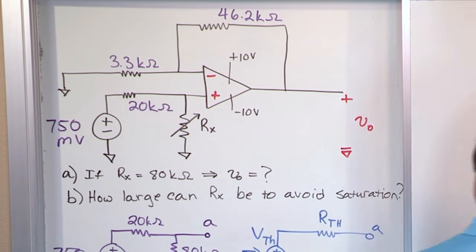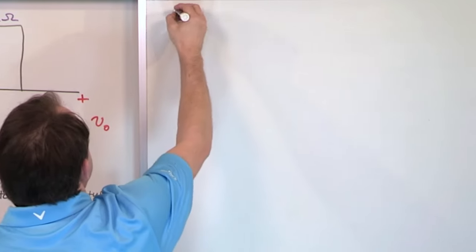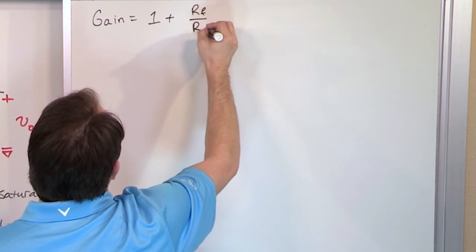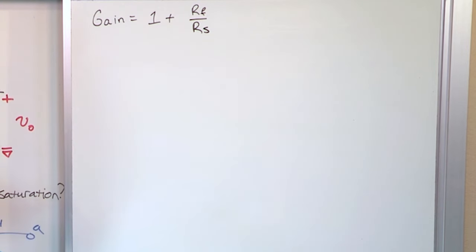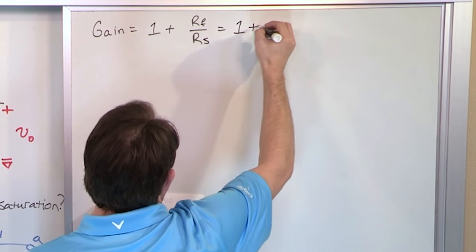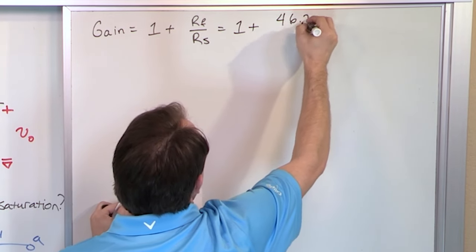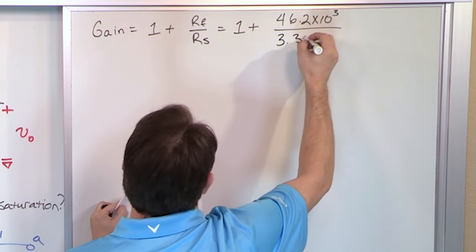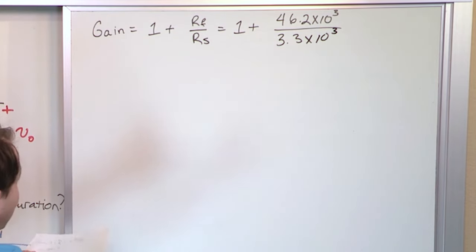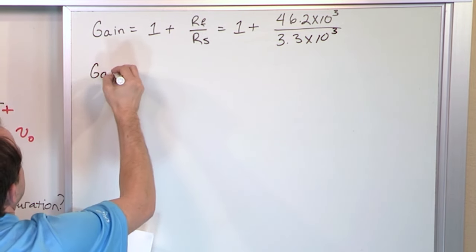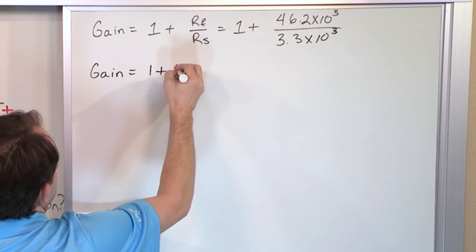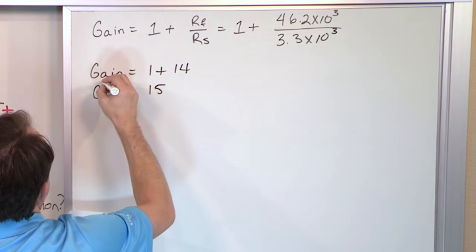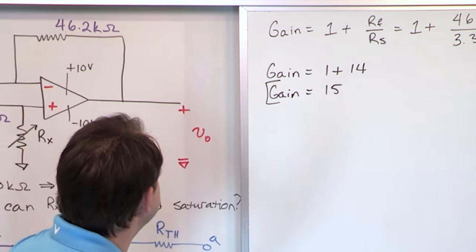From here on out, the problem is trivially simple to solve because the gain of this amplifier is 1 plus R_F divided by R_S, which has no dependency on anything else in the circuit. So we calculate the gain right now. The gain is 1 plus the feedback resistor 46.2 kilohms divided by R_S which is 3.3 kilohms. That gives 1 plus 14, so the gain is 15.